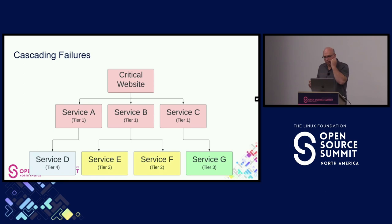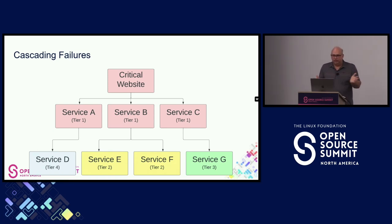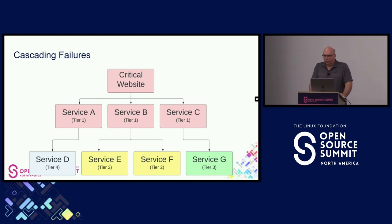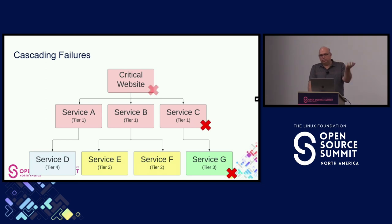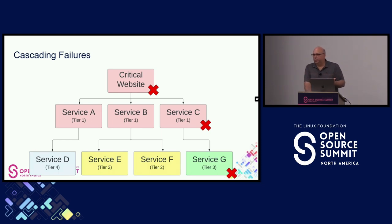Let's take a look at a hypothetical system. Here we've defined the dependencies of the system and we've defined the tiering. But what if there's a problem with this tier three service? If it also causes user-visible errors in the tier one services, then it's really not a tier three service to begin with — it should really be considered a tier one service.